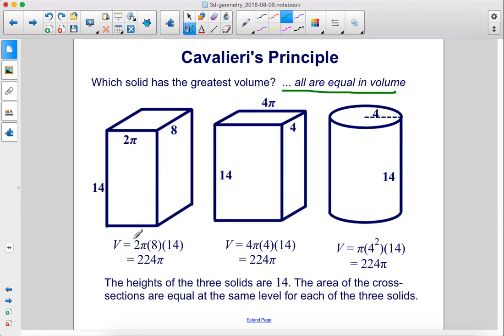This rectangular prism is two pi times eight times fourteen, which is 224 pi. Here, we have fourteen times four pi times four, which is also 224 pi.